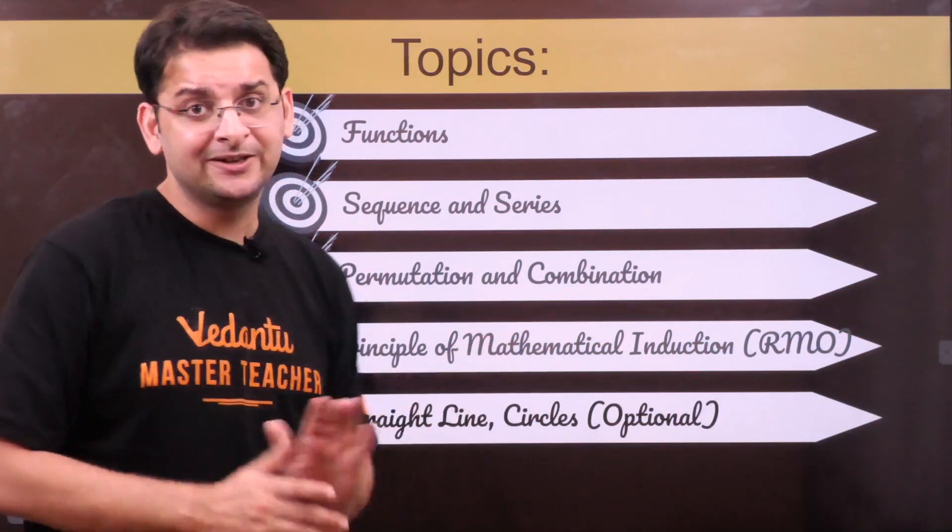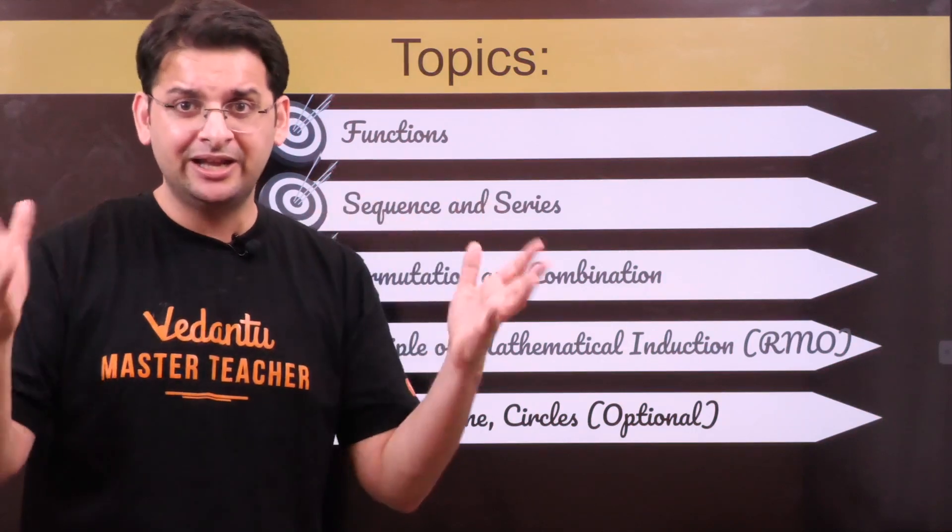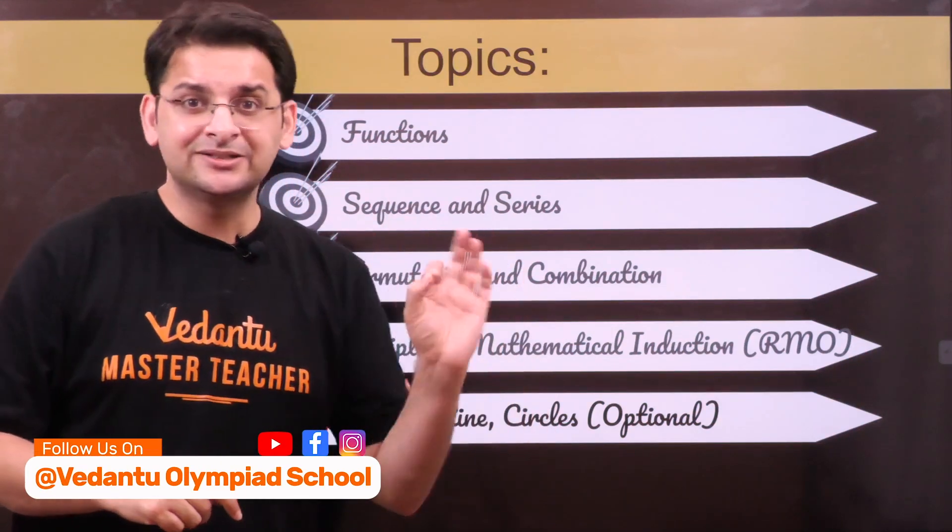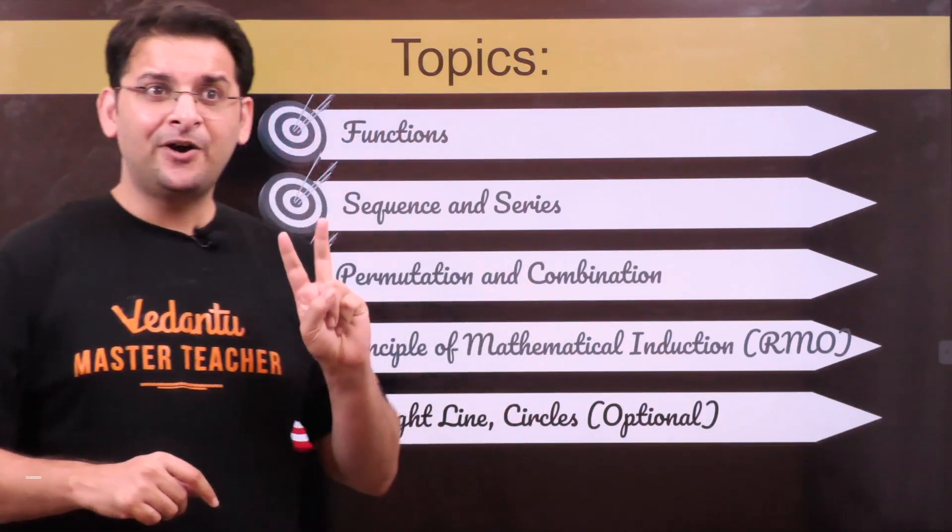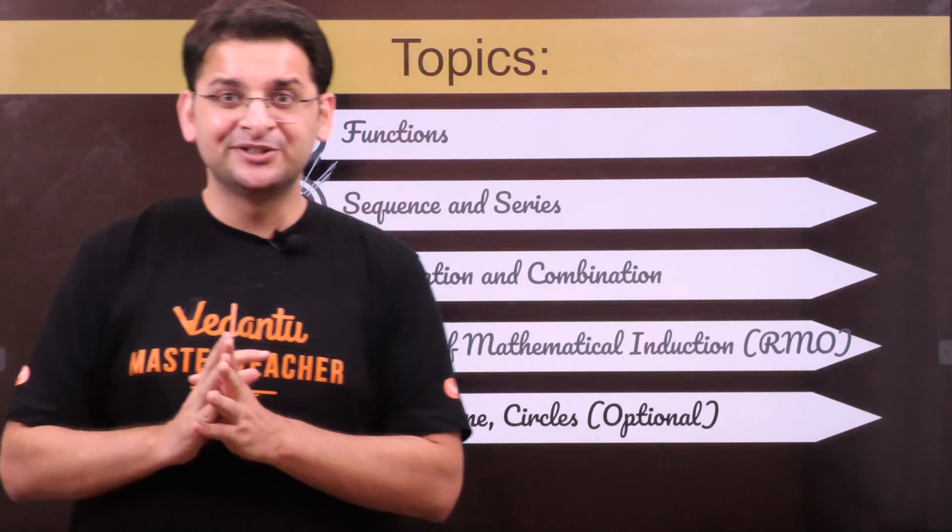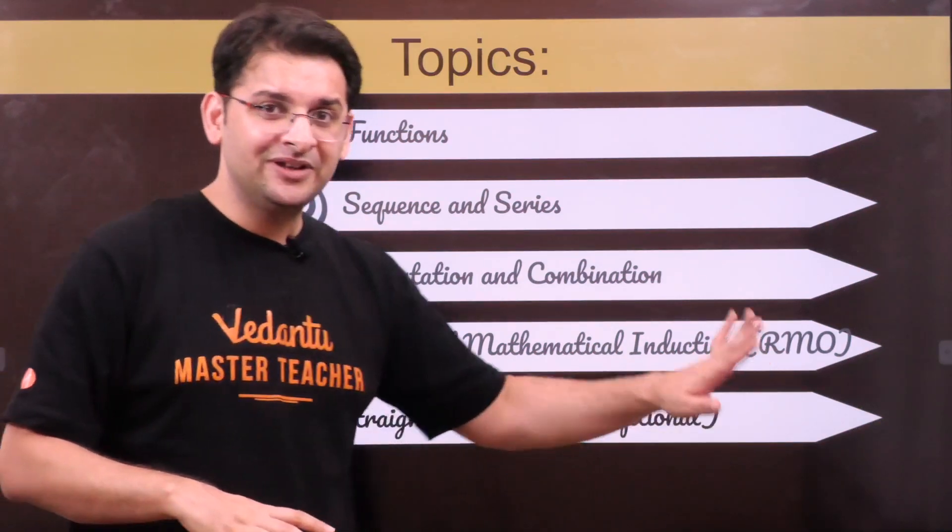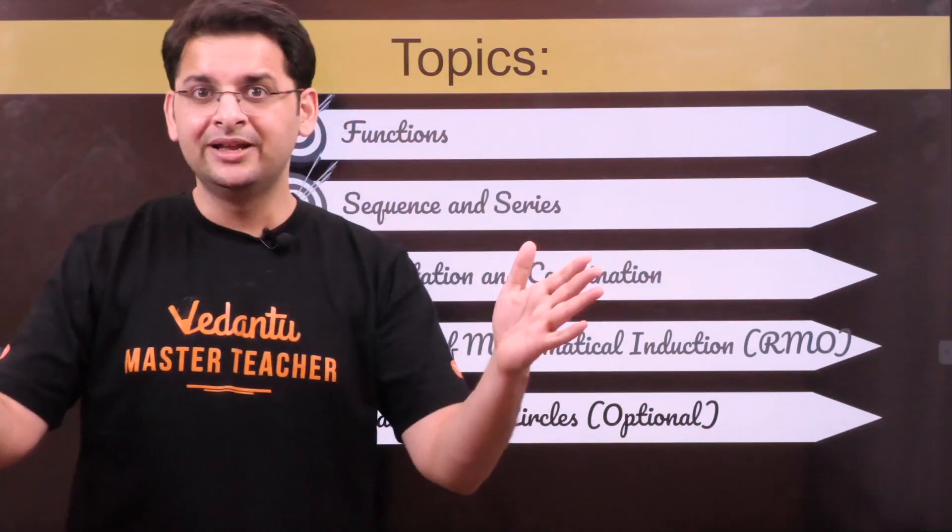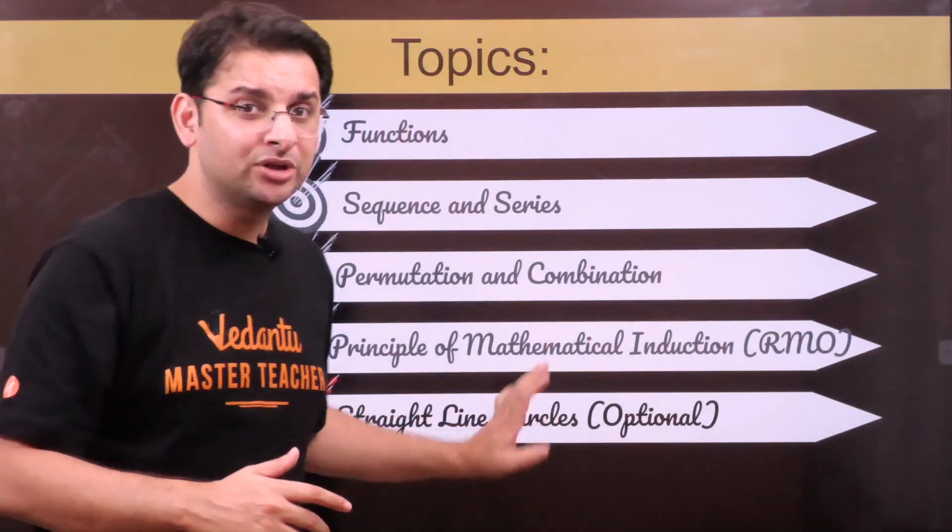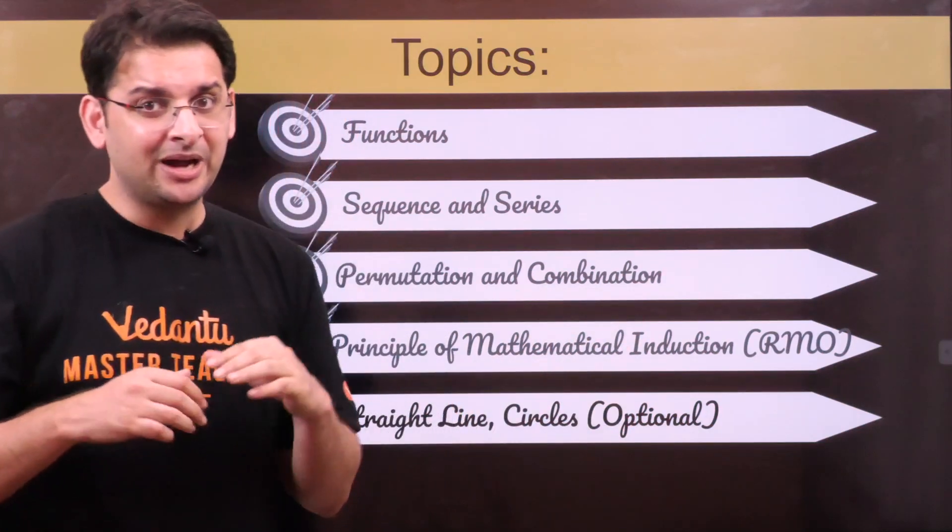Followed by straight lines and circles - I have written 'optional' because if you study this topic in 11th class, you can solve many questions using coordinate geometry. It may take time, but you get the answer. For example, there were two five-mark questions in IOQM this year which would be difficult with geometry, but using coordinate geometry would be relatively easier. This is optional, not compulsory, but doing this helps with many IOQM or pre-RMO level questions.